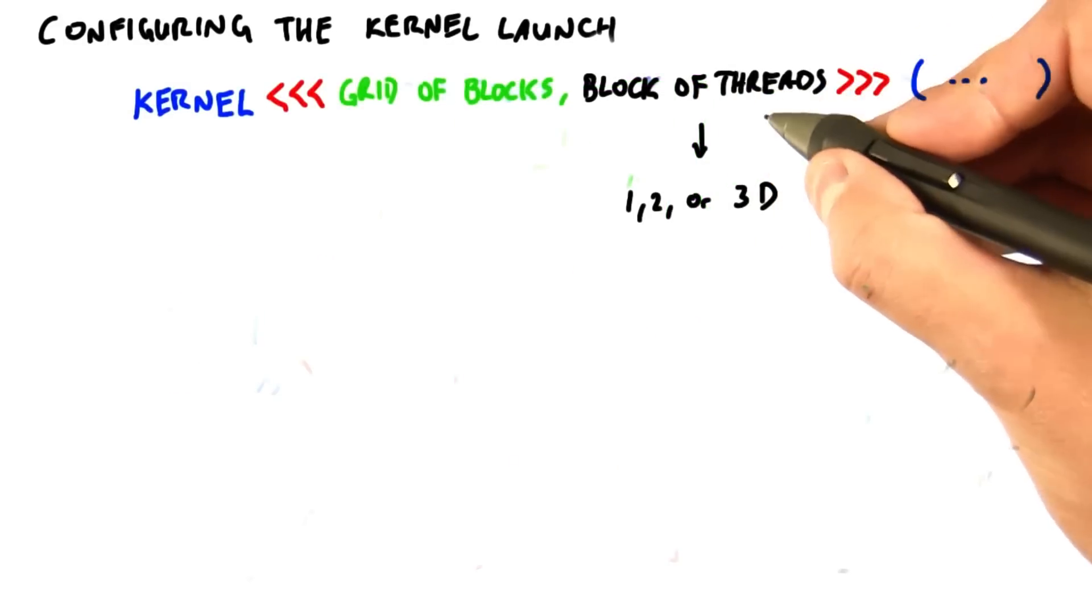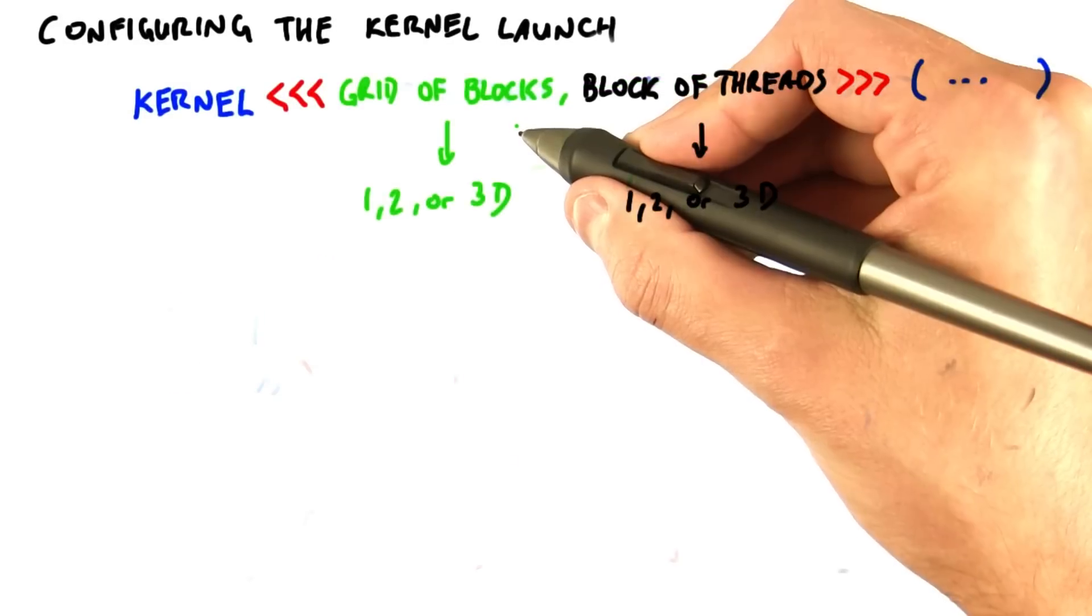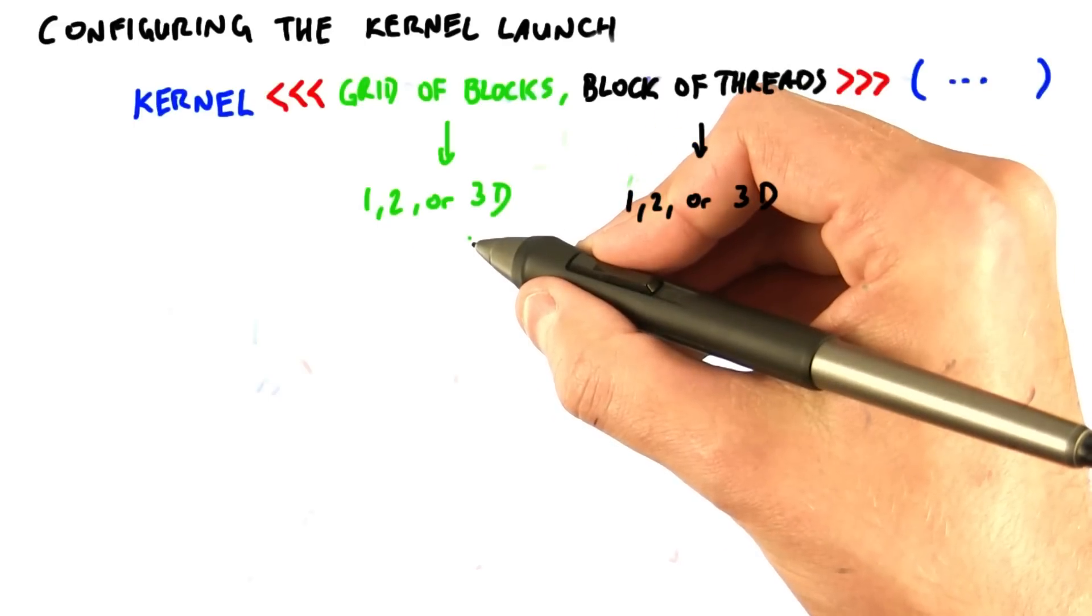So CUDA supports one-, two-, or three-dimensional thread blocks. We can also arrange thread blocks into one-, two-, or three-dimensional grids.